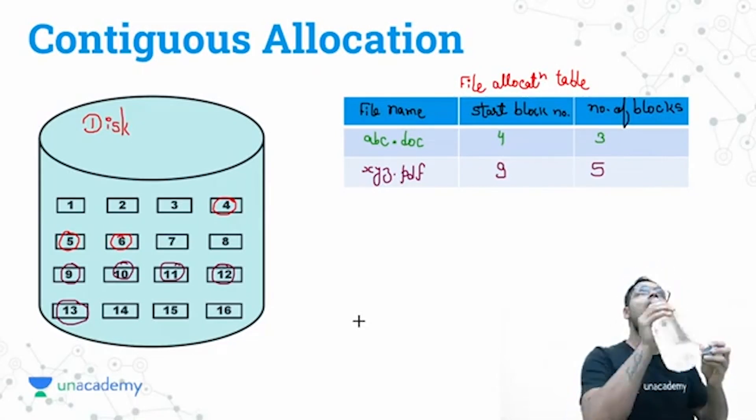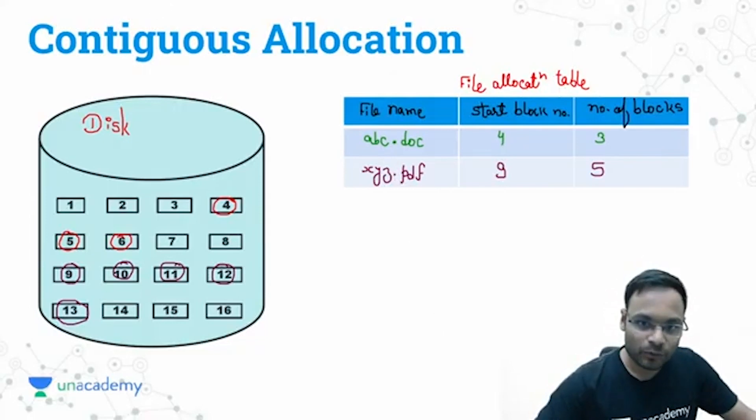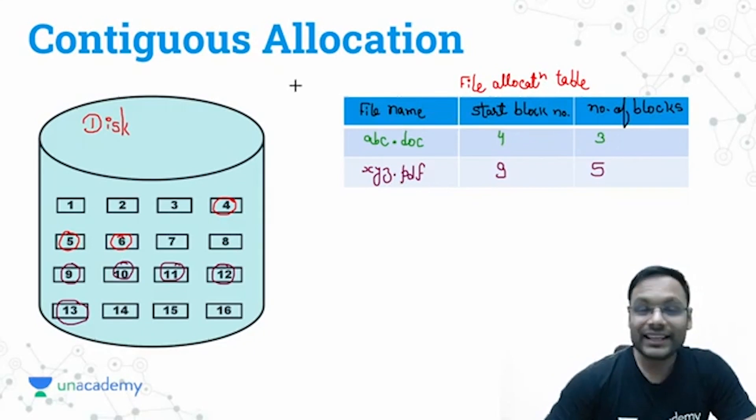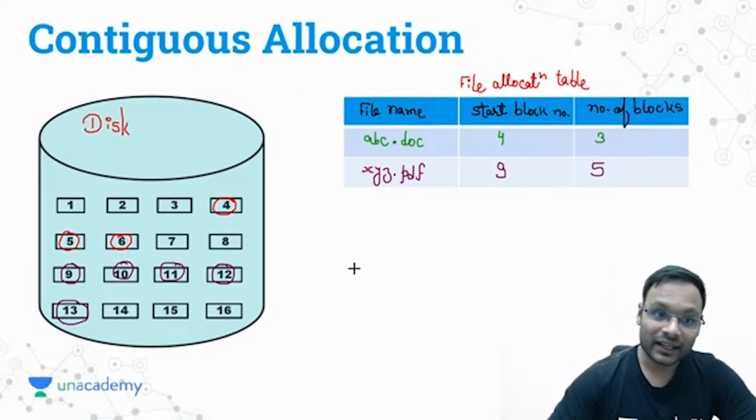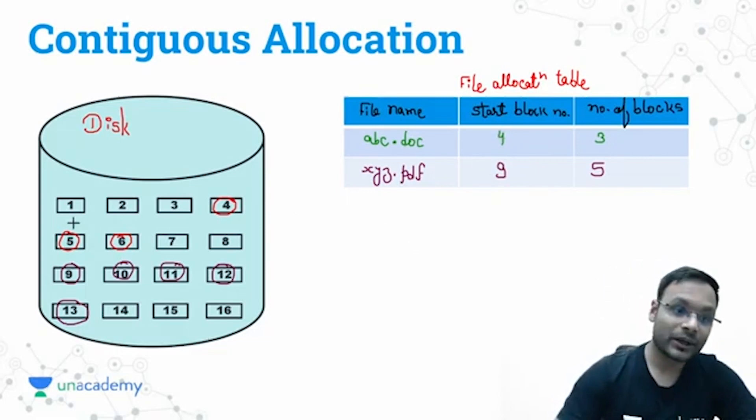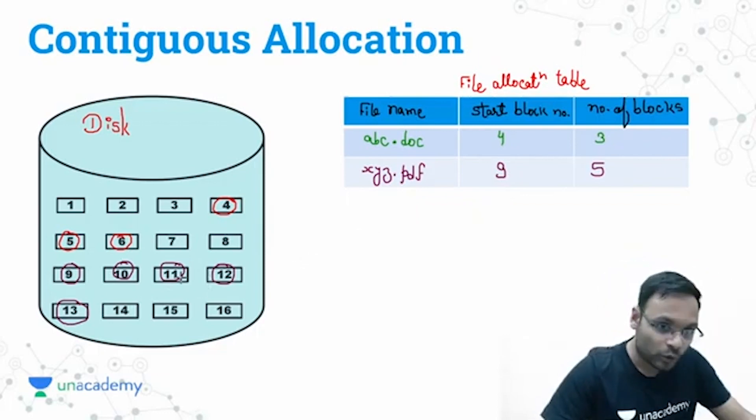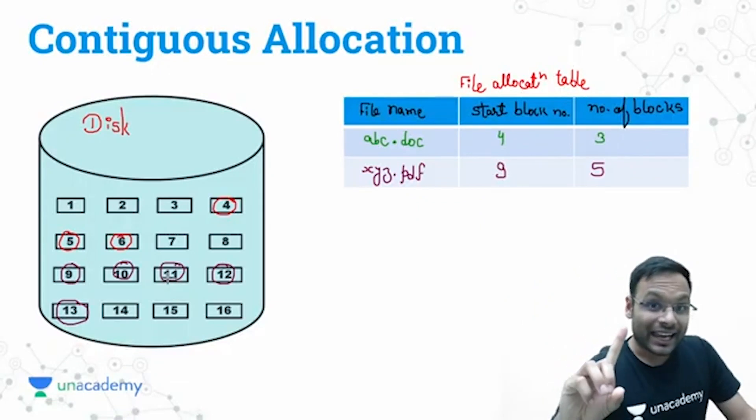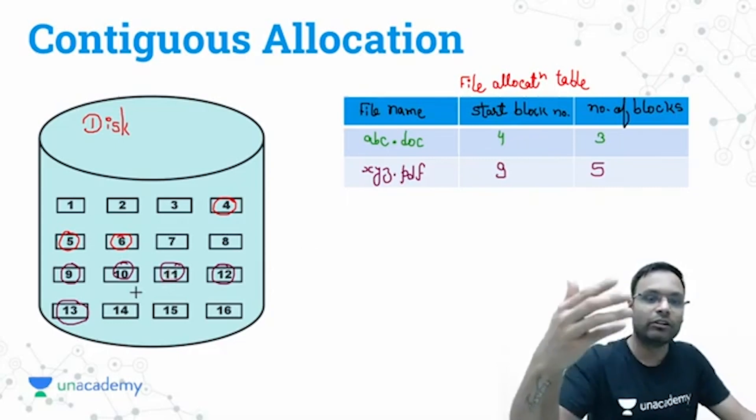In this contiguous allocation, how can you access a file? If I am saying I want to access the file's second block, can you access the file's second block directly? Yes. First block is at 4, then second block you can directly access at 5. If I am saying xyz.pdf's third block I want, if first block is at 9, second should be at 10, third will be at 11. Directly I can go with a simple calculation. I can access the content directly. Can I access randomly, directly any block? Yes, I can calculate which particular block you need.